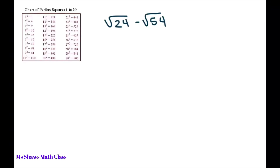We have the square root of 24 minus the square root of 54. The first thing you want to do is break up the square root of 24 with a perfect square — find a perfect square that divides 24, which is 4. So we write this as square root of 4 times the square root of 6 minus...